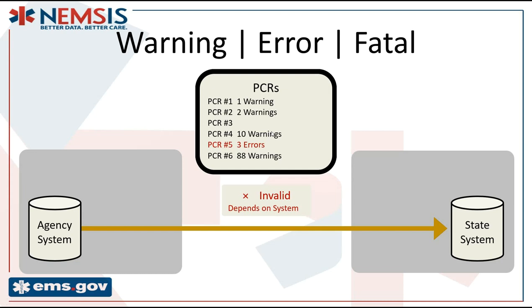If everyone follows best practice guidance — submitting one PCR at a time — there's only one record per submission, so there's no practical difference between errors and fatals. Overall, use errors judiciously and conservatively because they cause your system to reject data. Use fatals only for issues affecting an entire submission. Use warnings as an education and training opportunity — flag things but still allow data to flow.